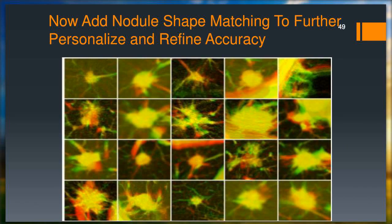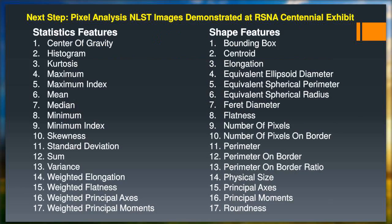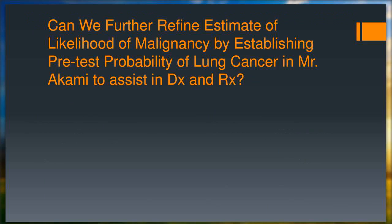We can also add nodule shape to the equation — taking a nodule and looking through the entire National Lung Screening Trial for all nodules similar to the one seen in our patient Mr. Akamai, then adding that nodule matching to our algorithm to determine likelihood of malignancy for his lesion. We used a large number of different variables looking at the pixels of the nodule themselves — there could be hundreds of different variables that one might use for a machine learning algorithm.